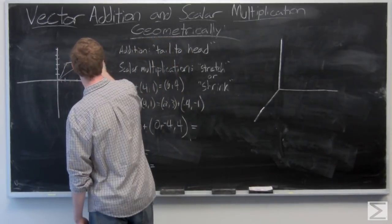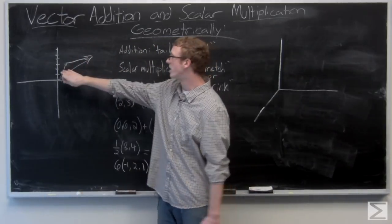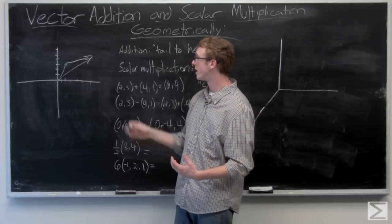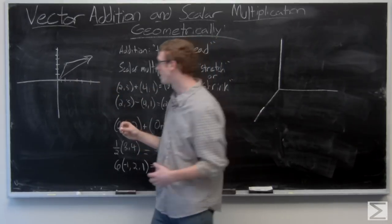So our vector (6, 4) looks like this and we can see that we had addition to get there. We could have also done it (4, 1) plus (2, 3).